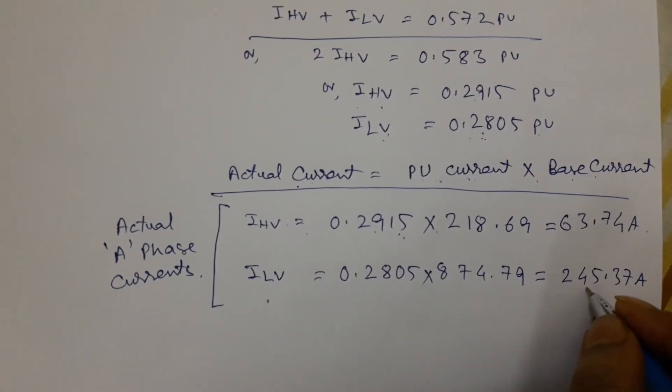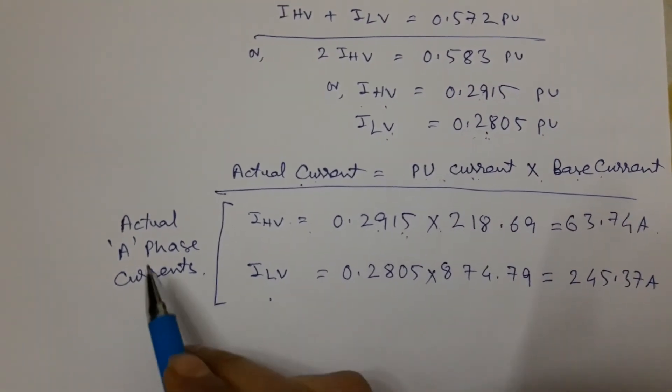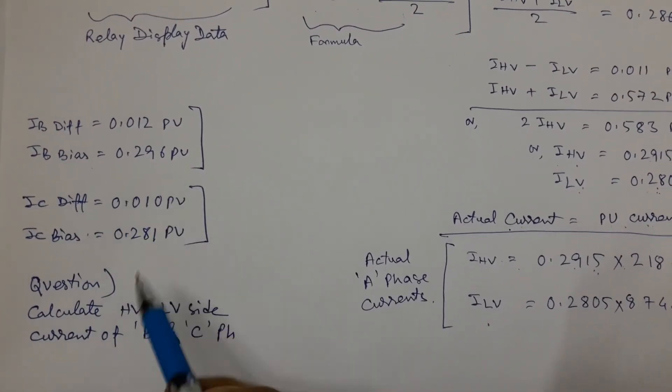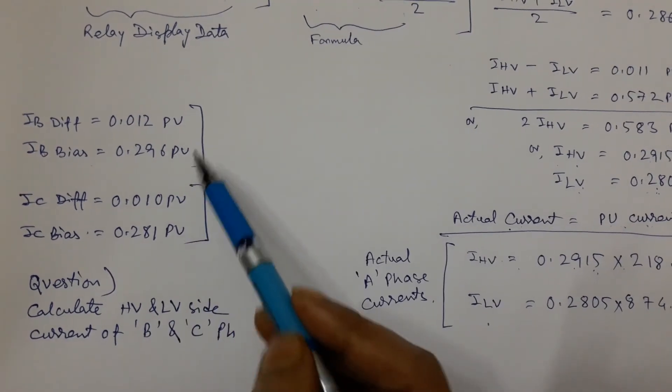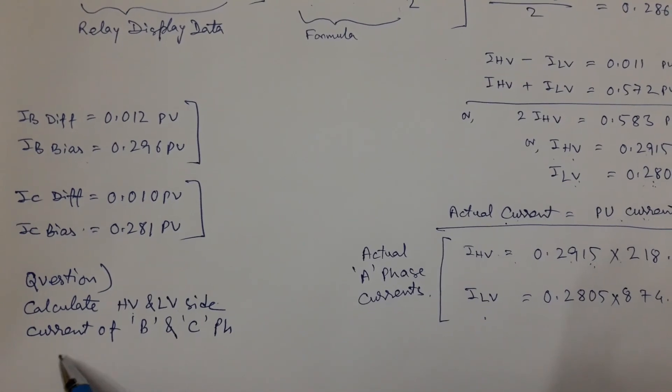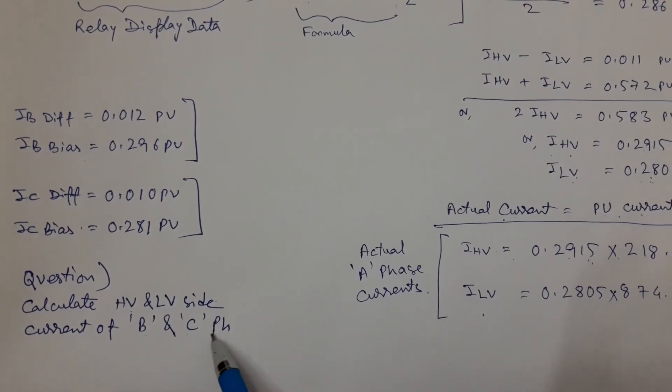B phase and C phase differential and bias current are also available in relay data. By using this relay data, you can calculate HV and LV side current of B and C phase also.